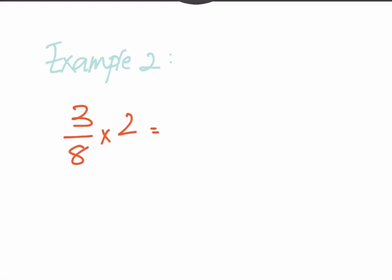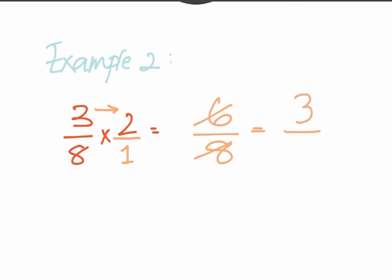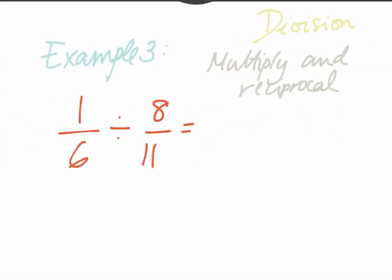What you have to do is think of there being a 1 below the integer 2, and go again with the same method — straightforward multiplication. So you do 3 multiplied by 2: the numerator is 6. Then 8 multiplied by 1: the denominator is 8. Simplify — half of 6 is 3, and half of 8 is 4 — so your answer is 3 fourths.